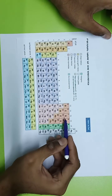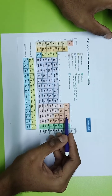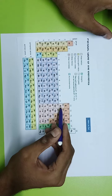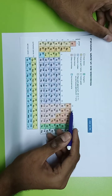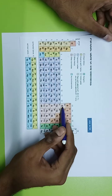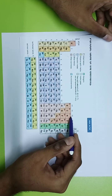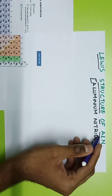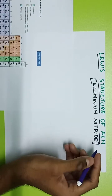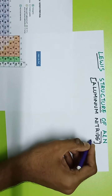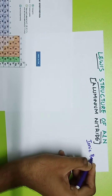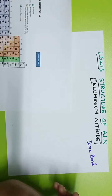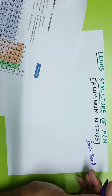Nitrogen is in the 15th group — it's the first element of group 15. Aluminum is in the 13th group, with the symbol Al. So here, group 13 has aluminum and group 15 has nitrogen, and this forms aluminum nitride.